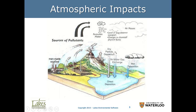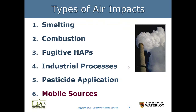These are just some examples of atmospheric impacts. Air impacts can be caused by smelters, combustion from power plants or cars, fugitive hazardous air pollutants — one of them is evaporative losses, those are fugitive HAPs. Industrial processes can also have fugitive sources, or pesticide applications. These are types of air impacts. Our topic today is air dispersion modeling for mobile sources.